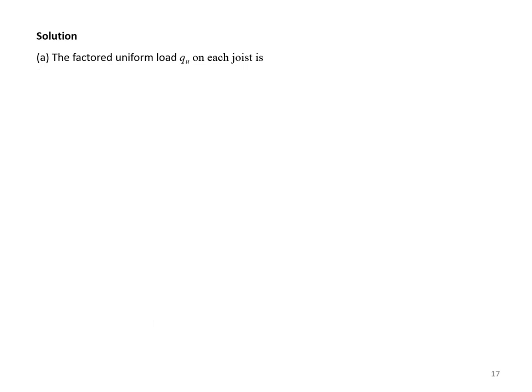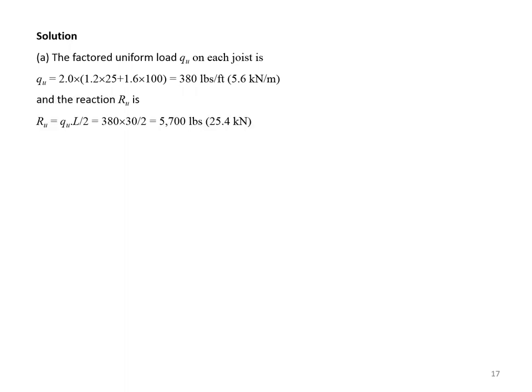The factored uniform load QU on each joist is 2 (tributary width) × (1.2 × dead load + 1.6 × live load) = 380 pounds per foot. Therefore, the reaction as a simply supported beam is QU·L/2 = 5,700 pounds.